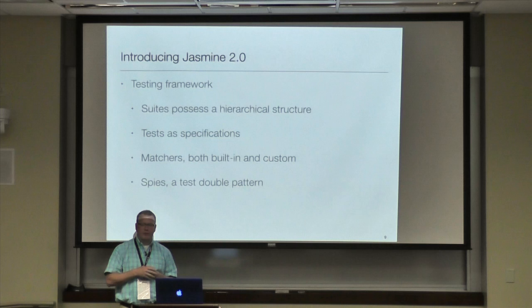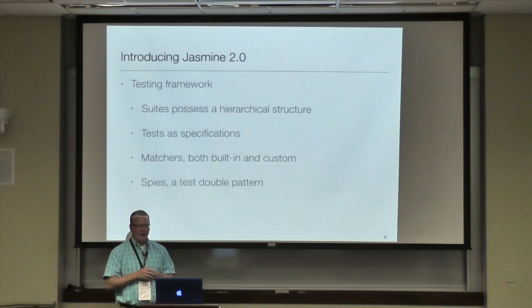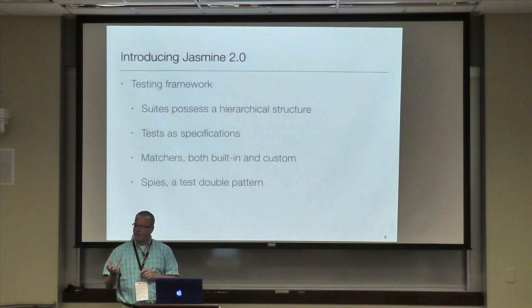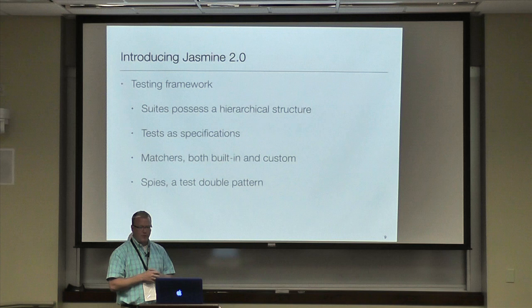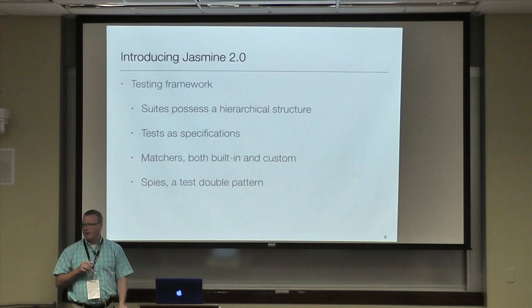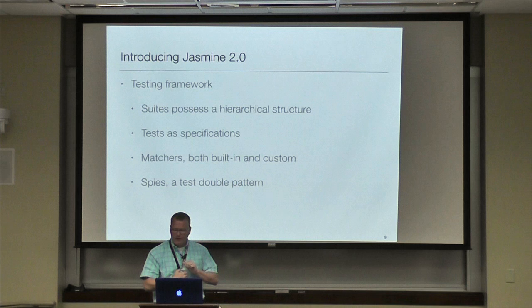Jasmine 2.0 has a hierarchical structure for a test suite. It's a behavior-driven development tool coming from the Ruby world — it looks very much like RSpec if you've used RSpec before. Tests are known as specifications. You've got built-in matchers so when you're doing your verification you can use those to do your expectations. And a big feature of Jasmine is their spy support — spies are a type of test double design pattern.